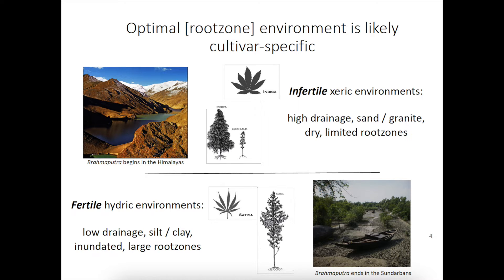So you are a Lamarckian indica, growing at the top of the Hindu Kush mountains, and you are struggling for existence. You have some ecological problems: you're the occupant of infertile, xeric, dry soils. They are acidic. Coming at you is a tremendous mess of photons of various strengths and intensity, and the day length is short.